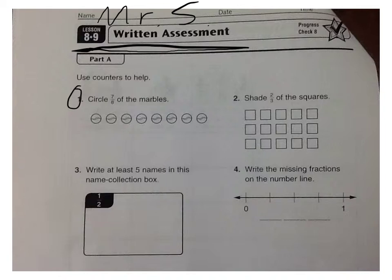Number 2. Shade two-thirds of the squares. So you'll have to know how many one-third of the squares is. We'll divide these into thirds and then shade two-thirds of them. So divide them into three equal parts.